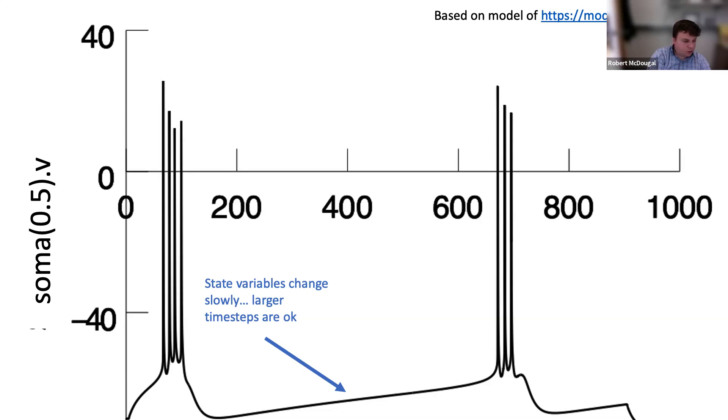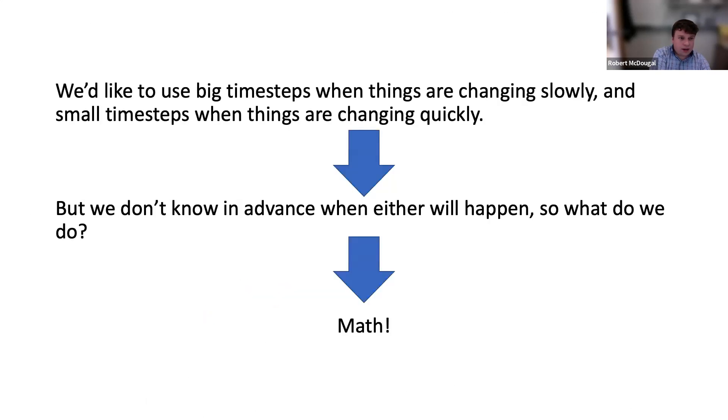In theory, we want accurate results. We could use big time steps when things are changing slowly and small time steps when things are changing quickly, but we don't know in advance when either will happen. So what do we do? We use math—in particular, variable step integration.